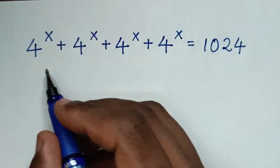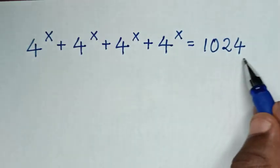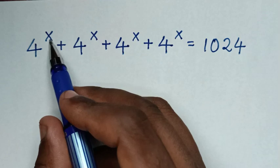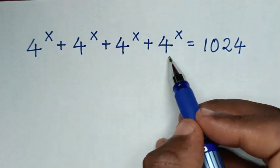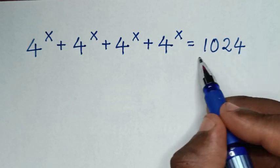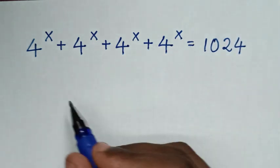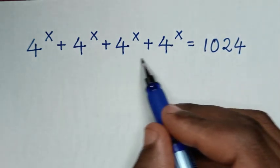Hello, you are welcome to solve this math problem: 4^x + 4^x + 4^x + 4^x = 1024. To find the value of x from this equation.